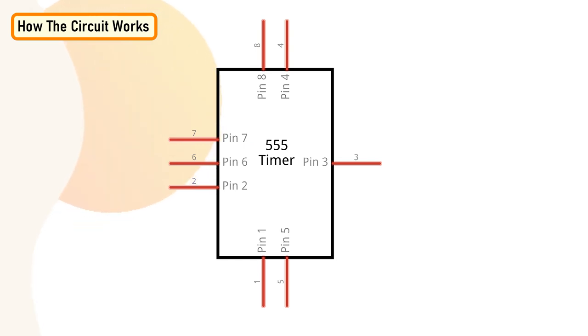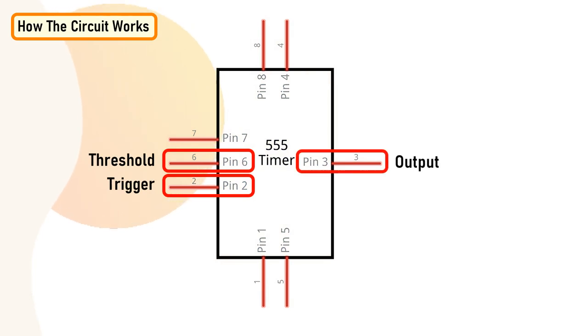And when the output is off, the discharge pin, pin 7 gets internally grounded. This is how the trigger pin pin 2 and the threshold pin, pin 6 of the 555 timer IC, senses voltage and controls the output at pin number 3.